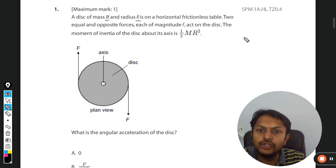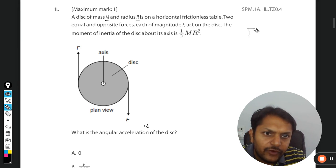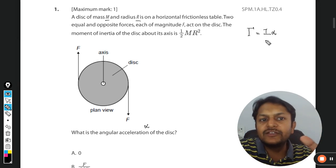In this question, the moment of inertia is given, the mass is given, the radius is given. We want to find the angular acceleration. There is a straightforward formula: torque equals I times alpha, where alpha is what we need to find.